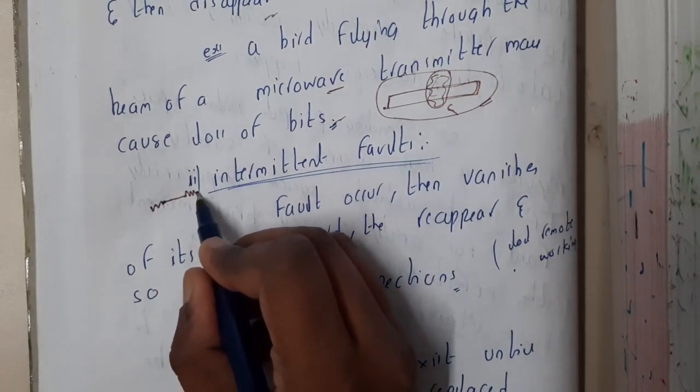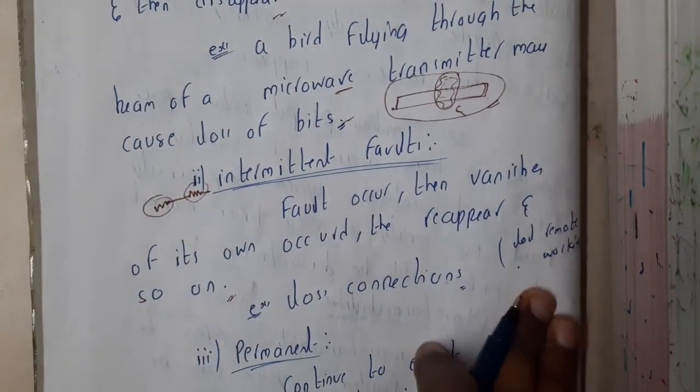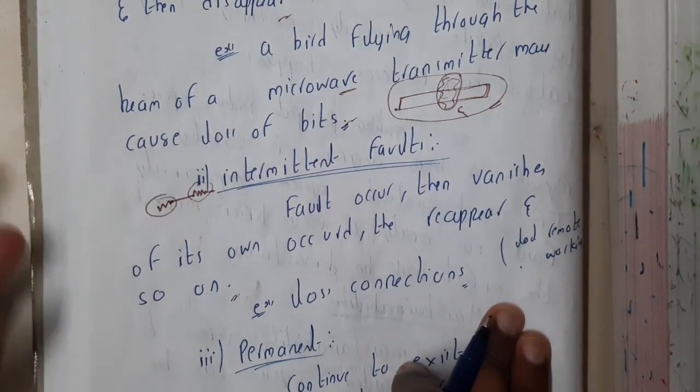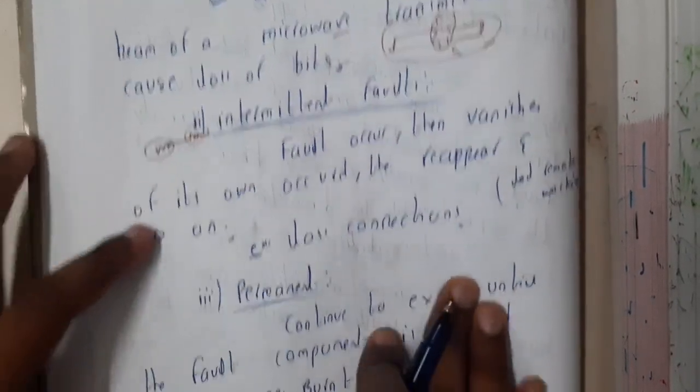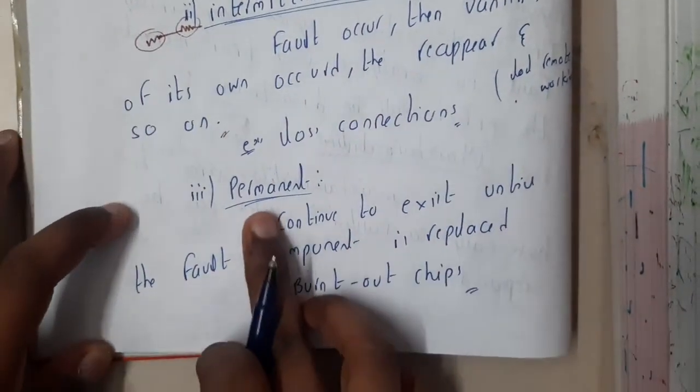Sometimes when our TV remotes have low battery, these kinds of issues will come. For some time it will be working and for other times it will not work. That is an intermediate fault. I think I wrote it in the wrong way, so please correct it on your own.